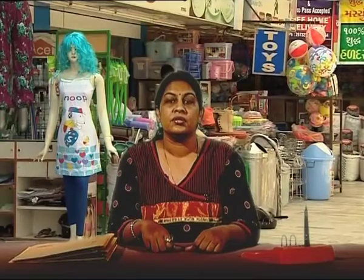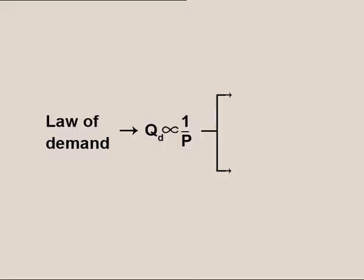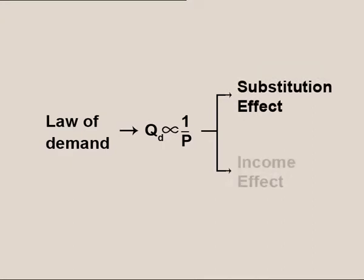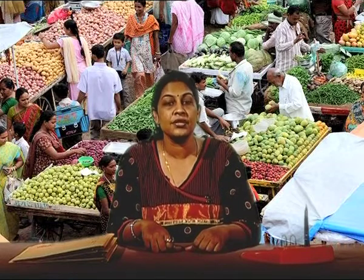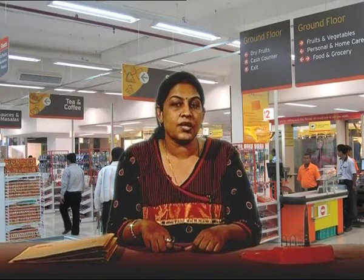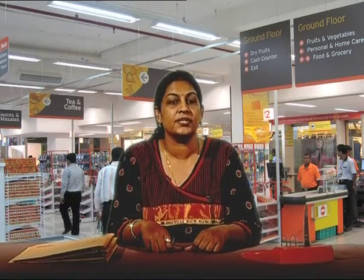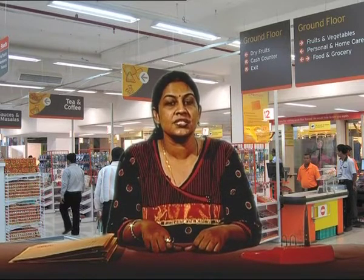Explanation. The inverse relationship between price and quantity demanded can be explained by two effects: substitution effect and income effect. Substitution Effect: suppose when the price of a particular good rises, the consumer finds its substitute comparatively cheaper and so they shift their demand to the substitute goods, which leads to a decrease in the demand for the original good. Income Effect: with the rise in price of goods or services, keeping money income constant, the consumer's real income decreases — that is, their purchasing power decreases — thus leading to a decrease in quantity demanded.